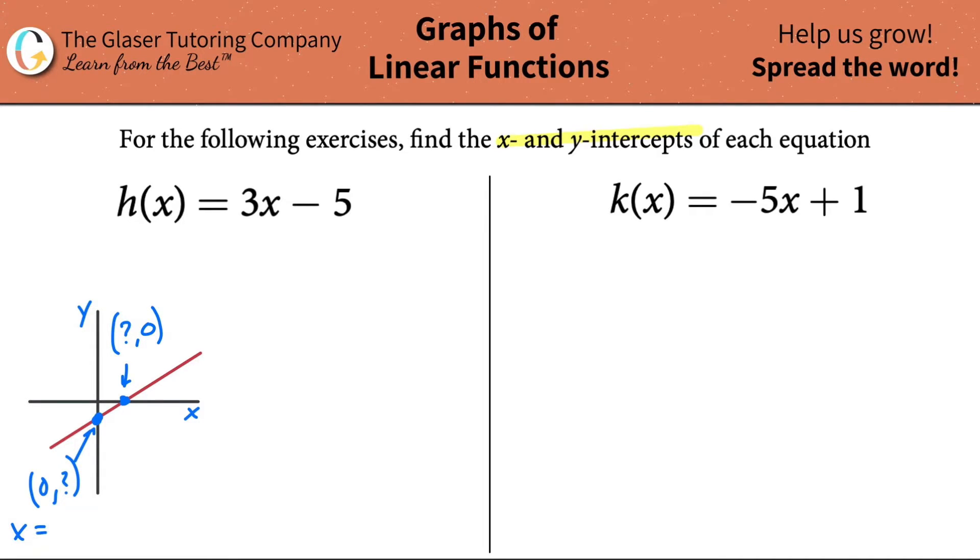So x here will be, for the y intercept that is, x is equal to zero, y is equal to something. And then for the x intercept, we have x is equal to something and y is equal to zero. You can definitely memorize that.